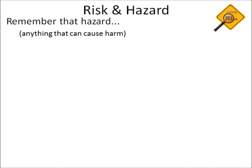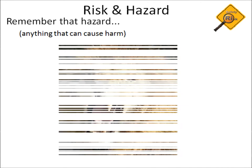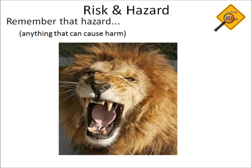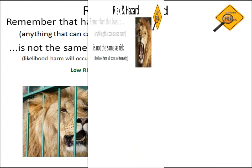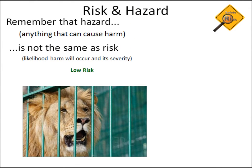When comparing risk and hazard, remember that a hazard is anything that can cause harm. A lion can cause harm and would therefore be deemed to be a hazard. This is clearly not the same as a risk. The risk is the likelihood that harm will occur and needs severity. To put this in perspective, a lion in a cage with strong bars would be deemed to be a low risk.